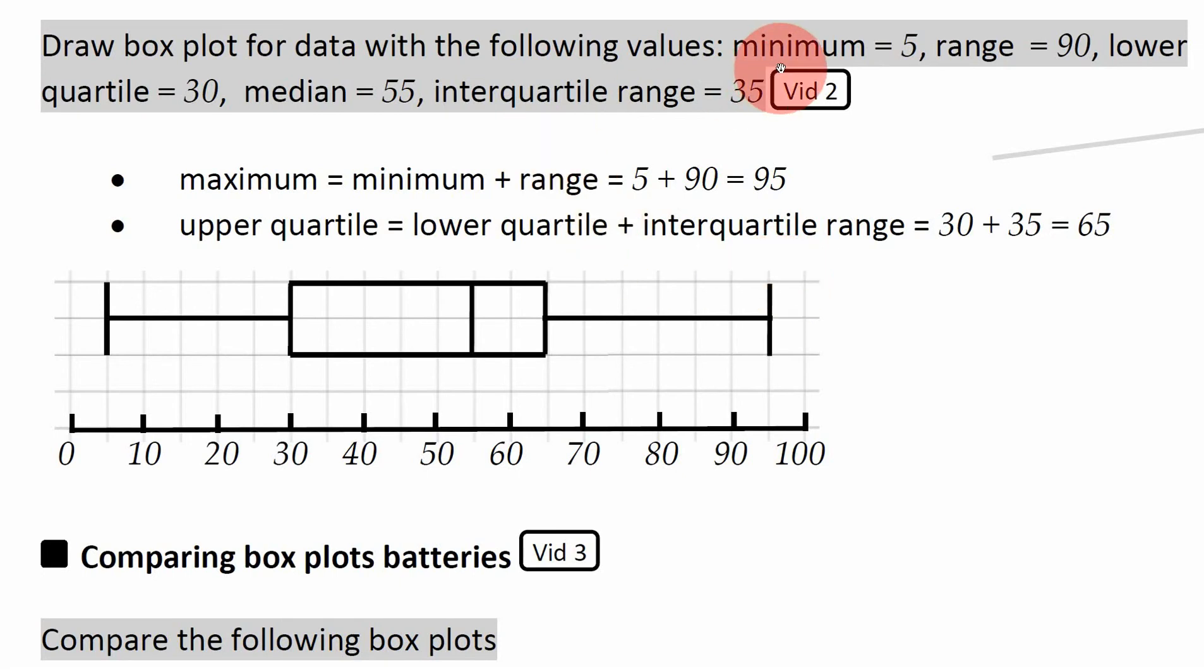So if the range is 90 and the minimum is 5, your starting point is 5, and you know from there to there is 90 wide, so you're going to do 5 plus 90, and that will give you 95, which will be the maximum.